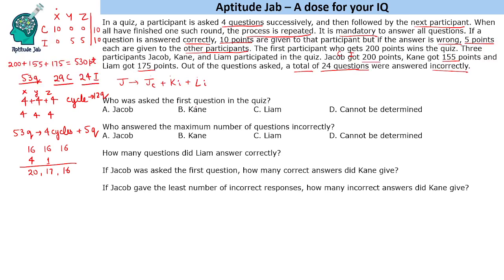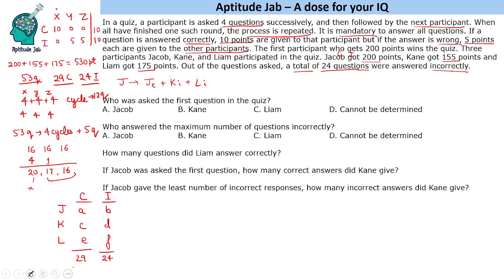We need to figure out who was asked the first question. Let us assign variables: for Jacob, Kane, and Liam — let a, b, c, d, e, f be the number of correct and incorrect responses respectively. We know the total correct responses a + c + e = 29, and total incorrect responses b + d + f = 24. That is the only information available to us.